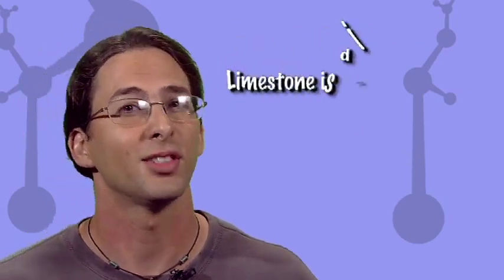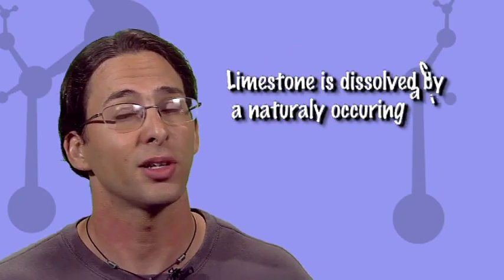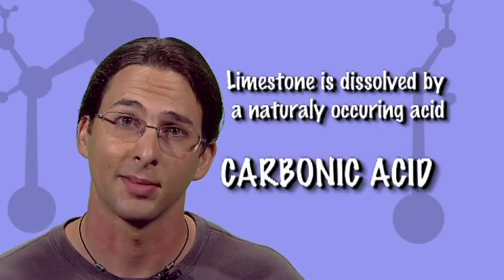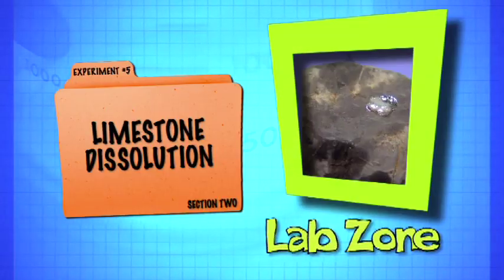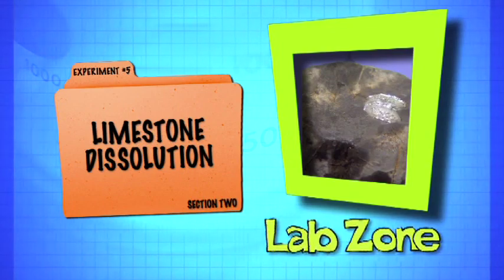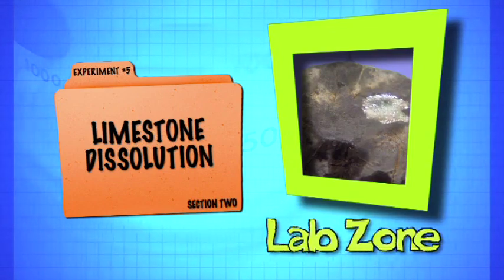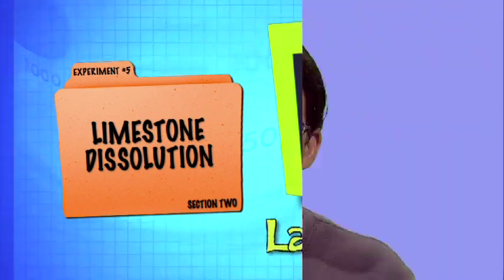Now we know what dissolution is and how it works. Limestone dissolves, but not quite like salt. Limestone is dissolved by a naturally occurring acid, carbonic acid. Carbonic acid isn't like acid rain, which is man-made. Carbonic acid occurs naturally in the atmosphere.